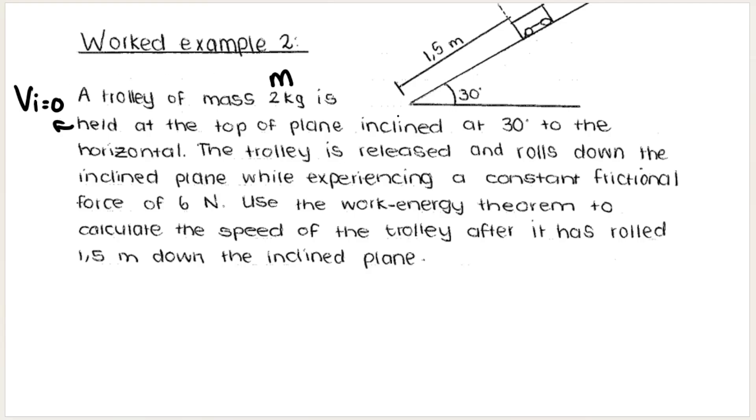The trolley is released and rolls down the inclined plane while experiencing a constant frictional force of 6 newtons. Use the work-energy theorem to calculate the speed of the trolley after it has rolled 1.5 meters down the inclined plane.